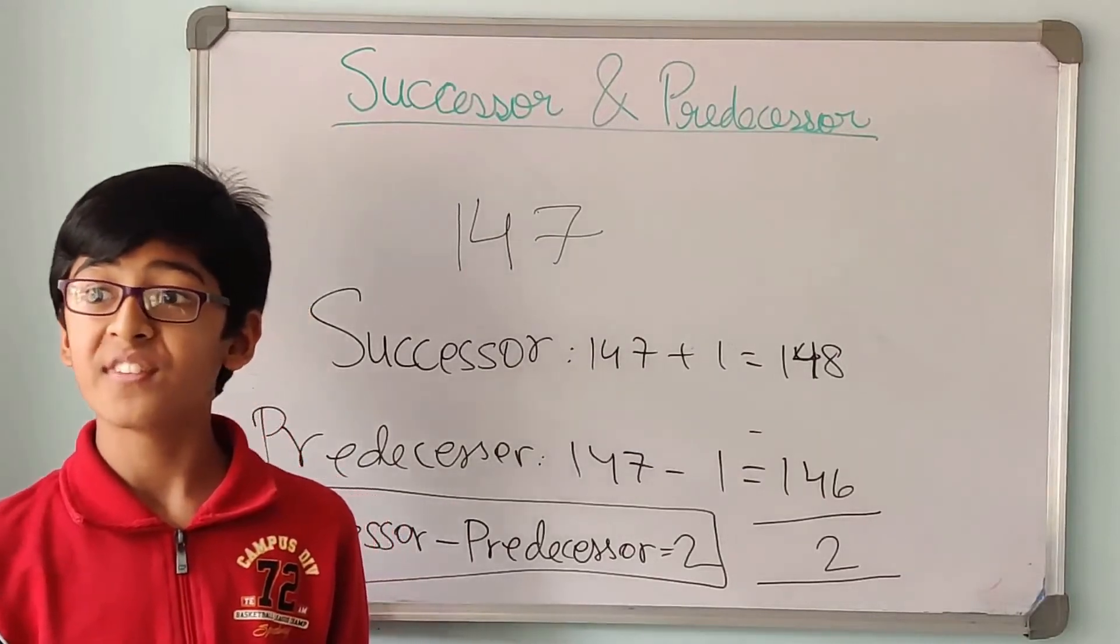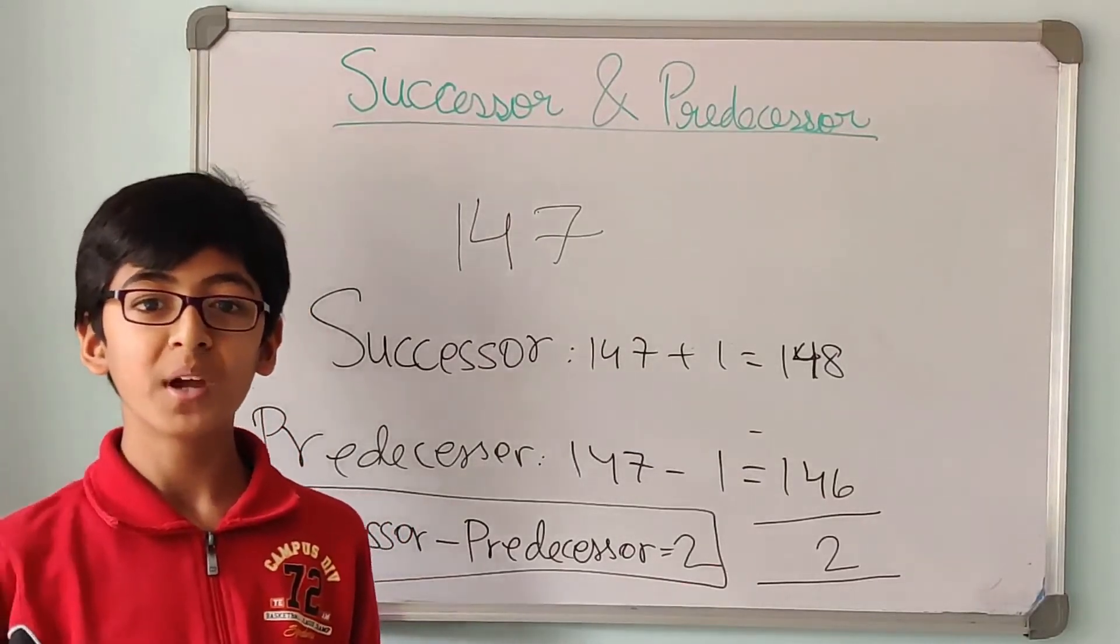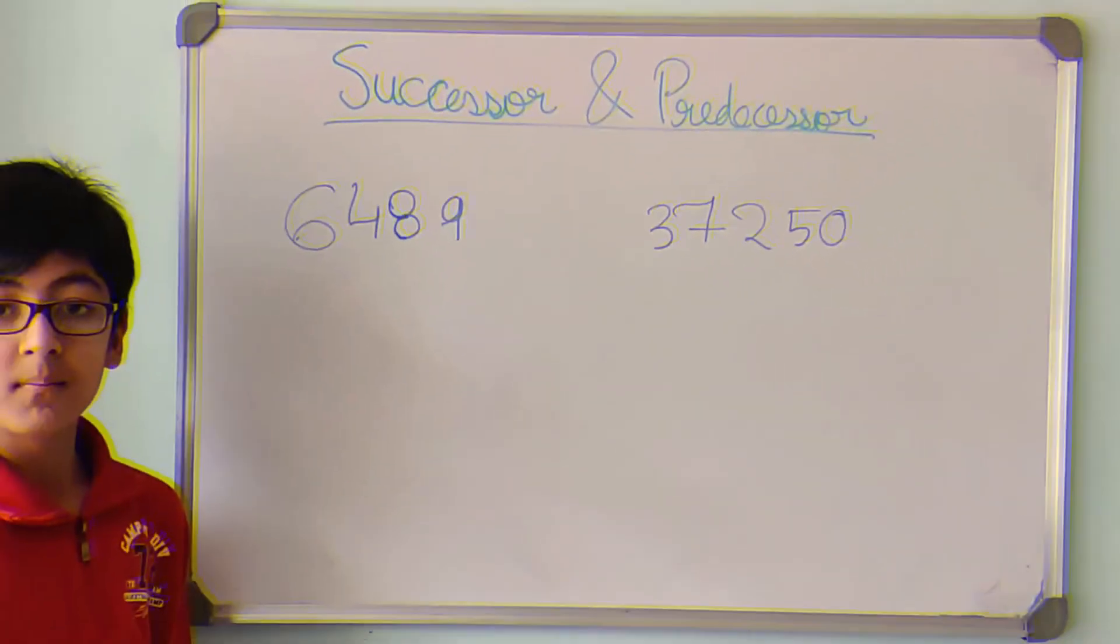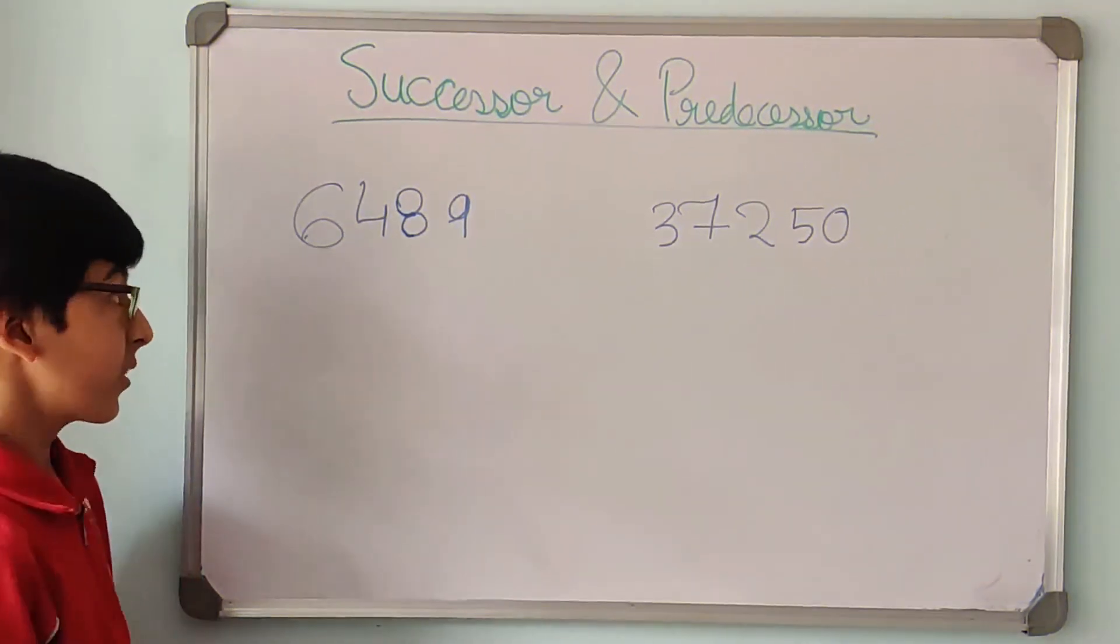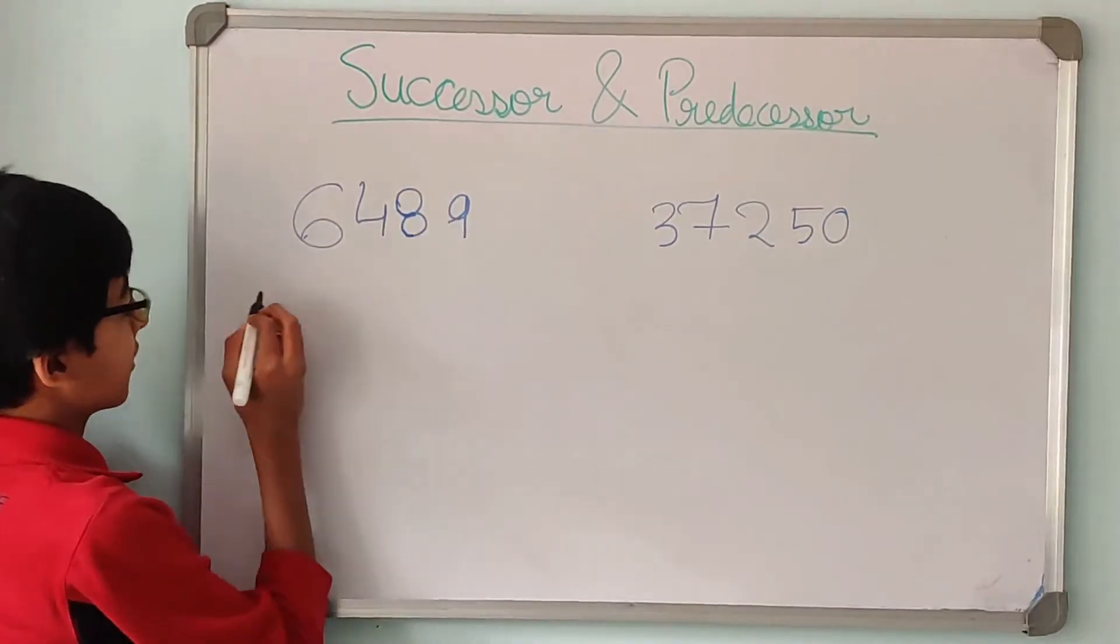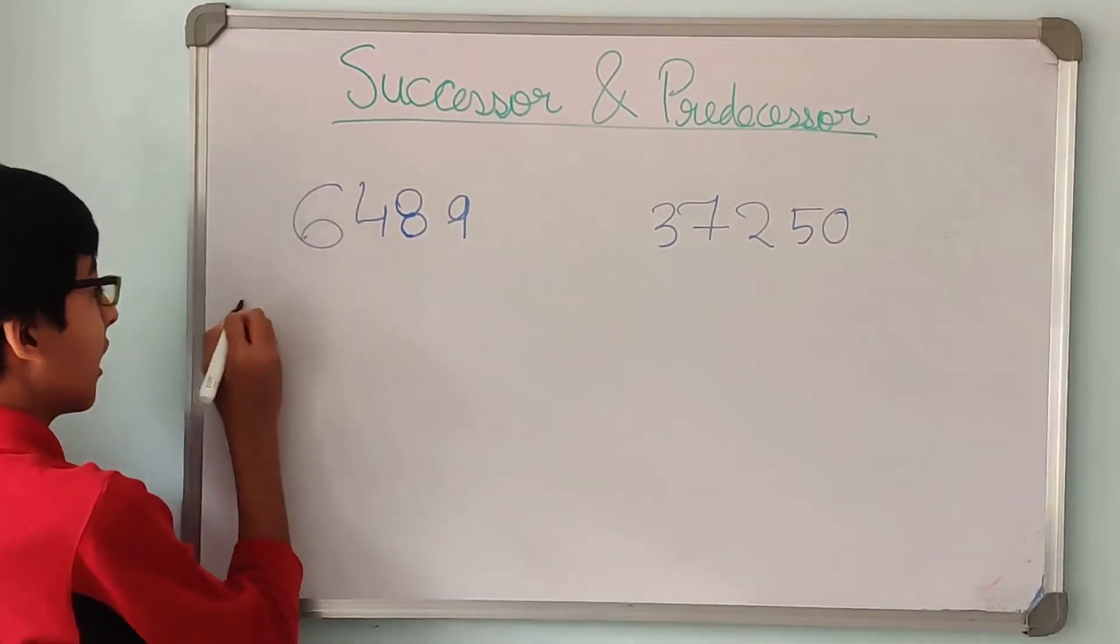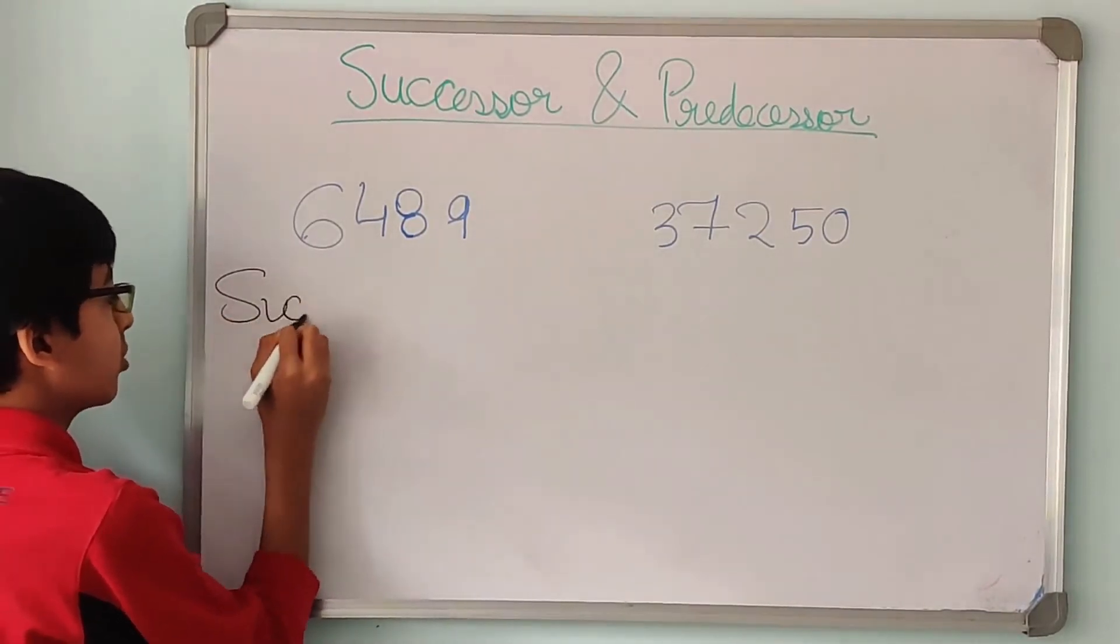Now let us find the successor and predecessor of big numbers. Now let us find the successor and predecessor of 6489 and 37250.